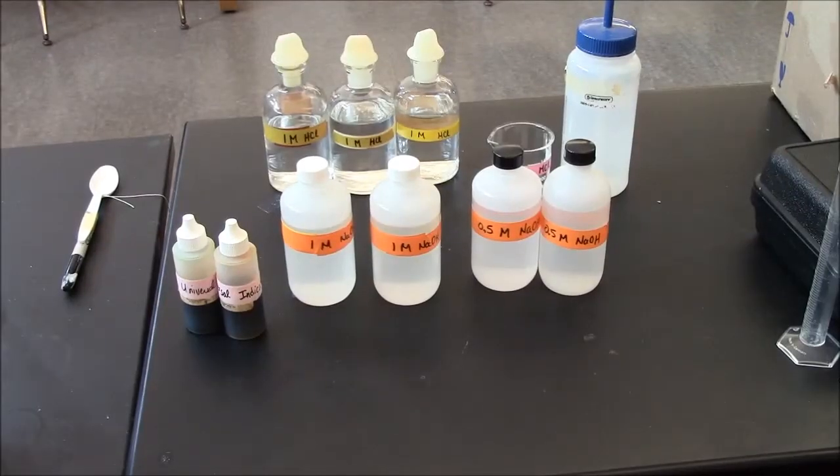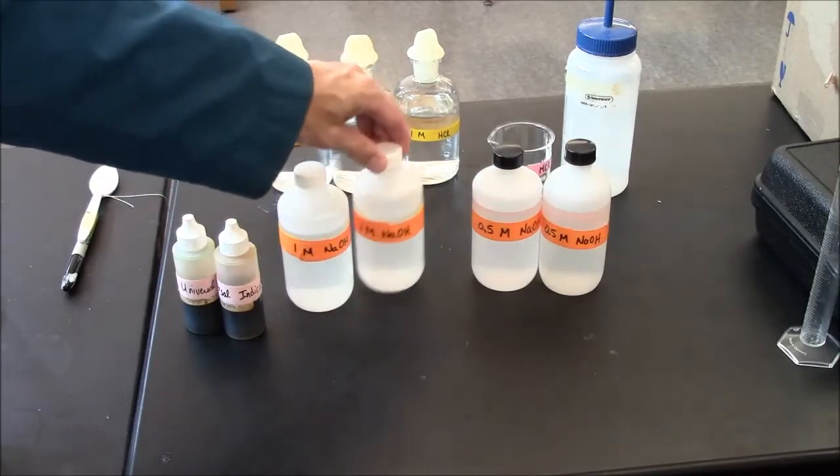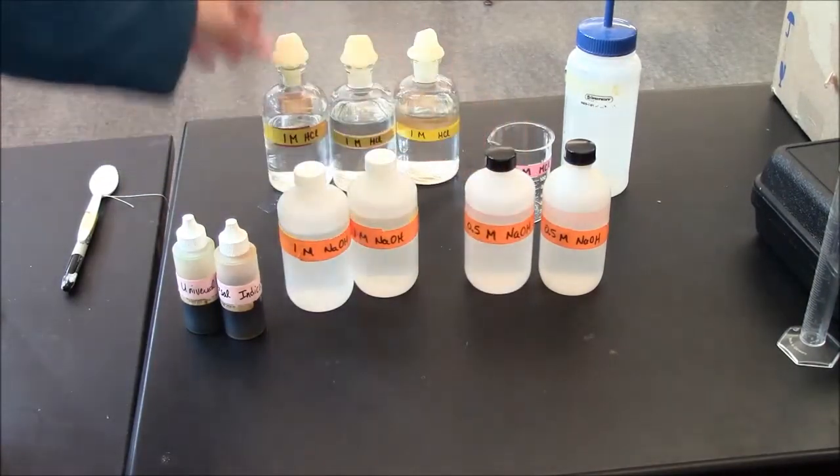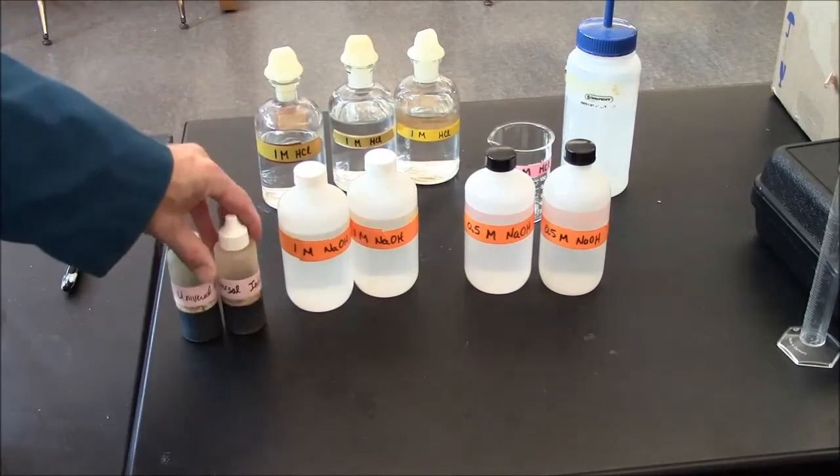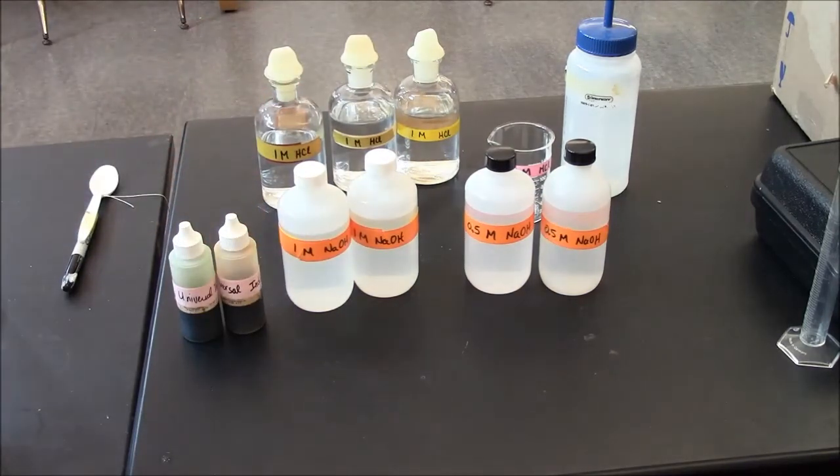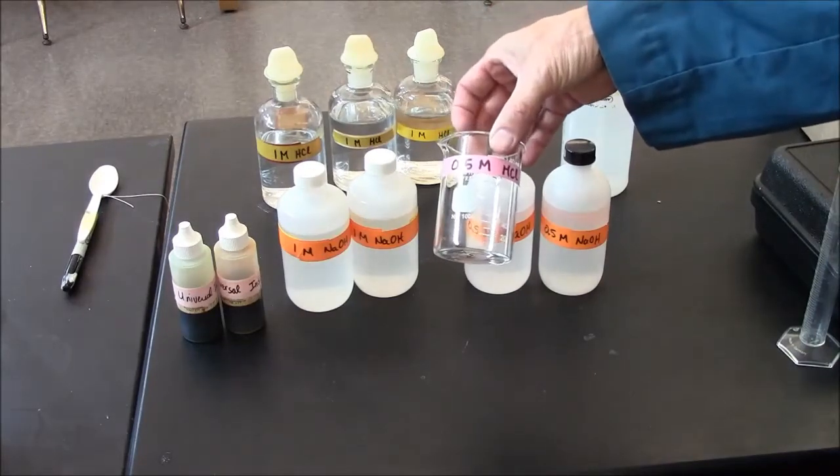When you reach the titration phase of the lab, you'll see I have provided one molar NaOH, half molar NaOH, one molar HCl, and universal indicator. It may be that your instructor asks you to use half molar HCl. I have not provided that on the table, but it's very easy to make.